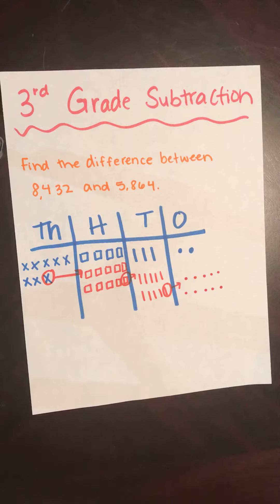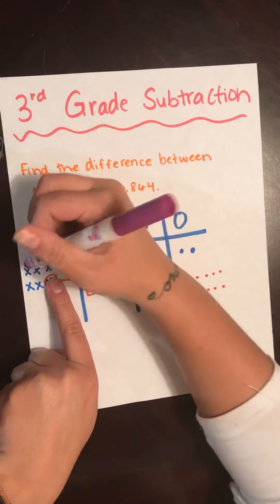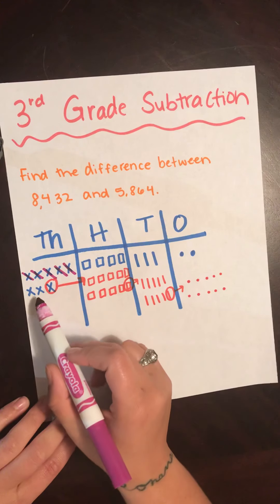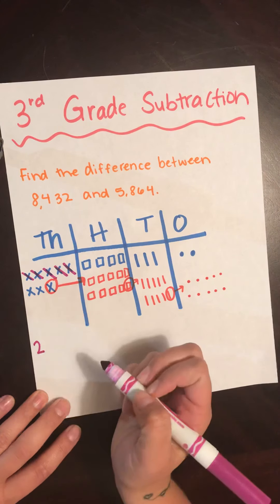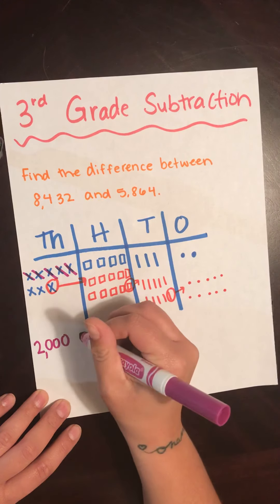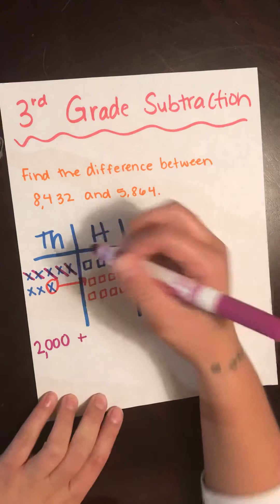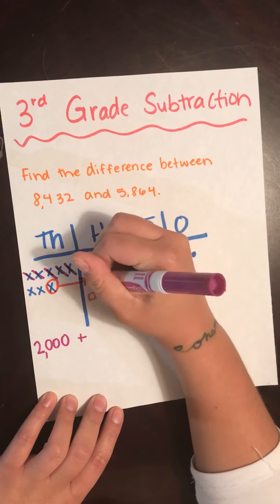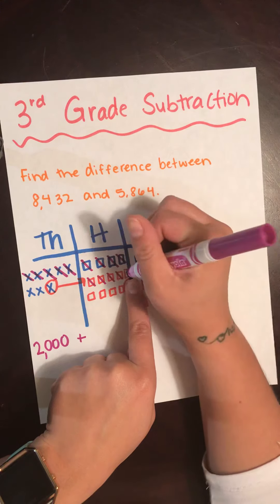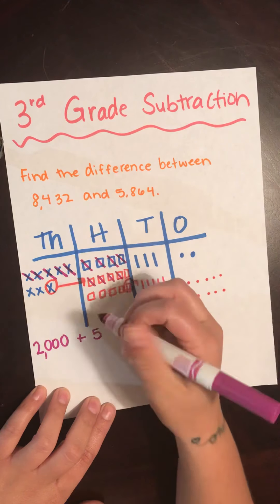In my thousands, I had 8, now I have 7. I need to take away 5, so I'm just going to cross them off: 1, 2, 3, 4, 5. We need to write how many we have left, which is 2. Those 2 X's mean 2,000 because it's in the thousands place. Plus, how many hundreds do we have left? We need to subtract 8, so I'm going to cross off 8: 1, 2, 3, 4, 5, 6, 7, 8. We count how many we have left: 1, 2, 3, 4, 5. So we have 5 in the hundreds place — that's 500.